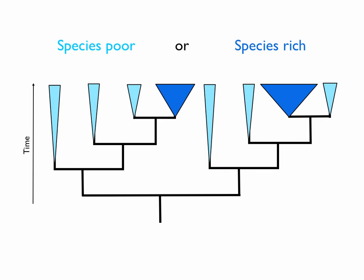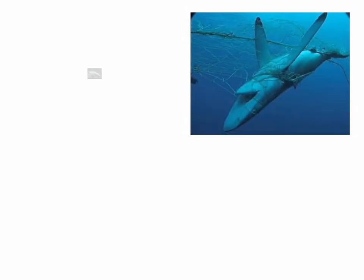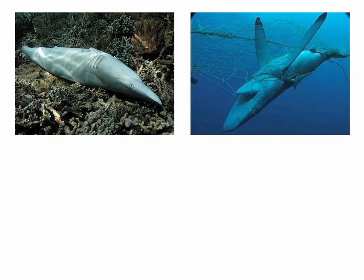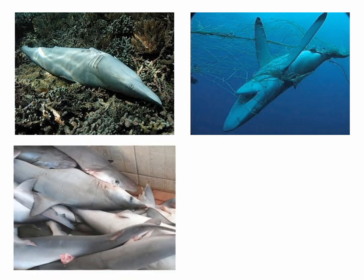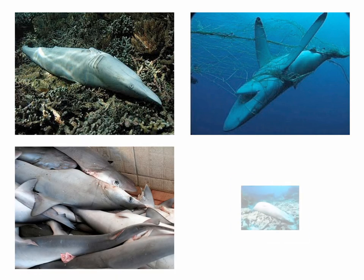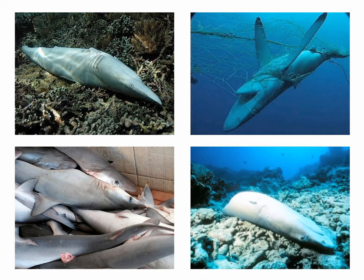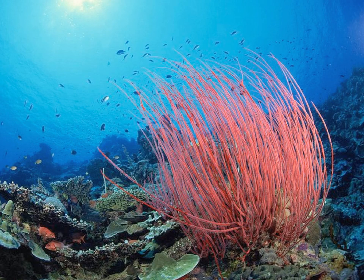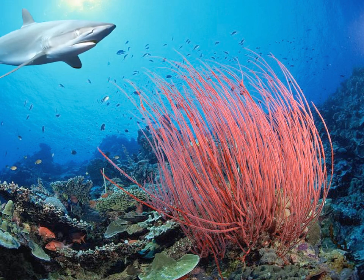Understanding shark evolution is also very important because sharks are under intense fishing pressure. Because limited resources force us to prioritize conservation efforts, it is imperative that we ground our decisions in scientific evidence to maximize the benefit of the actions we take. A robust phylogeny can identify shark groups that should receive more protection because they are found in very limited geographic regions, or others that represent ancient lineages with low diversity, thus higher potential to go extinct. Rooting our decisions in the biology and evolutionary history of these fishes will help prioritize and conserve valuable shark diversity, ensuring the stability of the oceans for future generations.